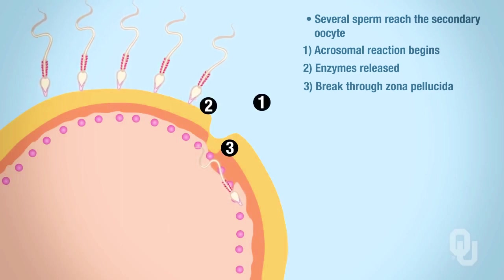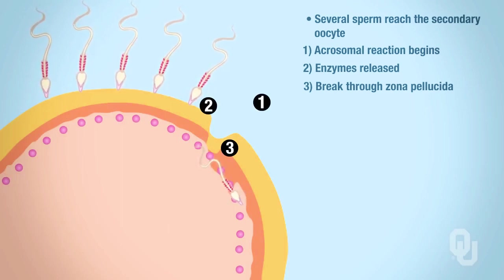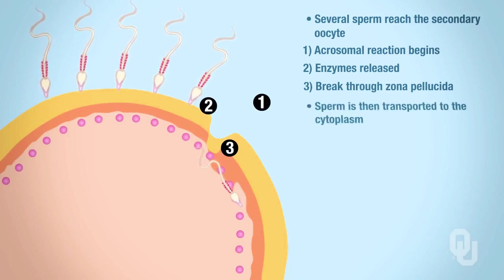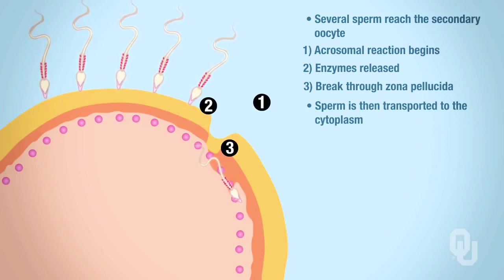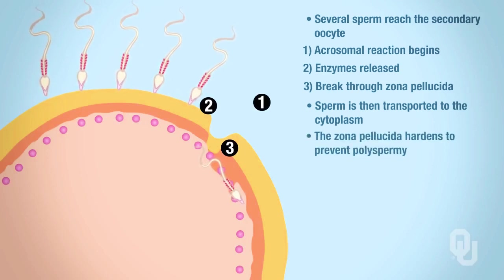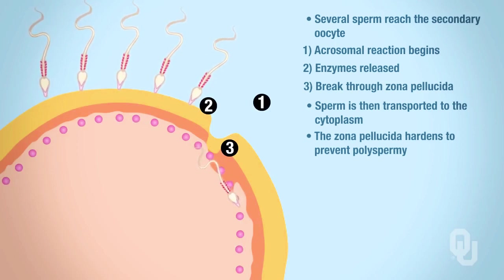That's the one that fertilizes the egg—it's got to bind to the receptor. Once that happens, the sperm can get transported to the cytoplasm of the oocyte, and then the zona pellucida will harden, and that prevents what's called polyspermy.